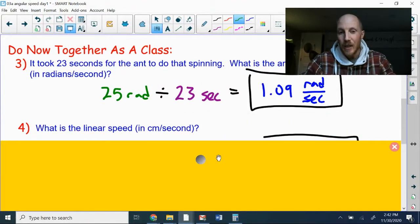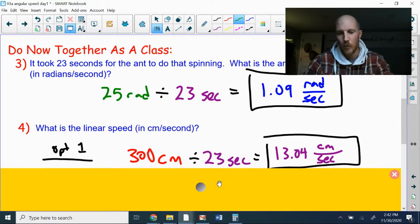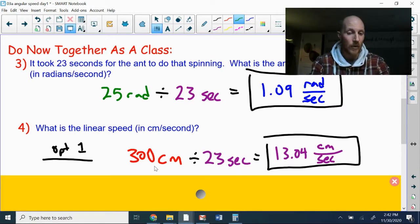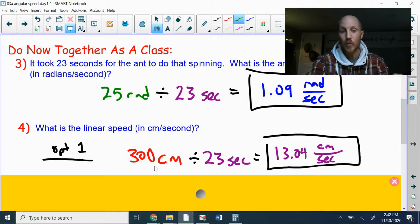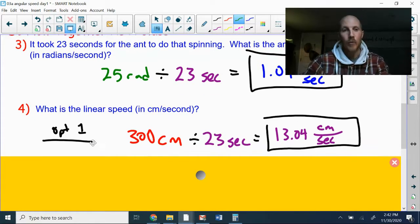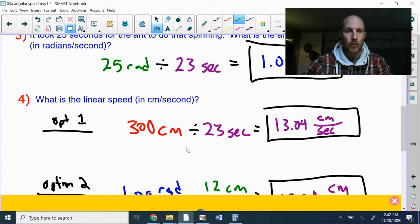Next up: what is the linear speed? This is actually where I was thinking we have two options. So option number one, I'm going to take that 300 centimeters that was given to me in the original problem divided by 23 seconds. Distance divided by time equals speed. In this case, for number four here, it's a linear speed. For number three, we took an angular distance and divided by time to get an angular speed.